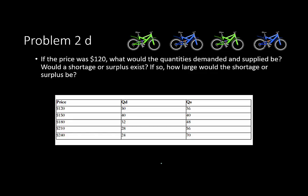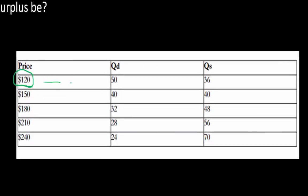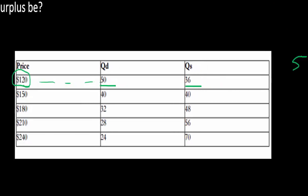For problem 2D, if the price was $120, what would the quantities demanded and supplied be? Going right to the $120 row: quantity demanded is 50,000 and quantity supplied is 36,000. Would a shortage or surplus exist? We have 50,000 demanded but only 36,000 supplied — more people want them than are available — so we end up with a shortage of 14,000.